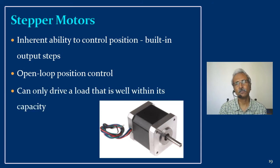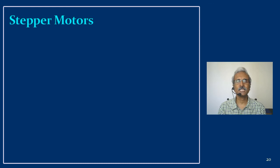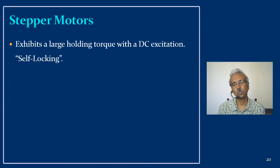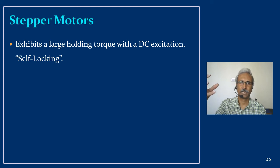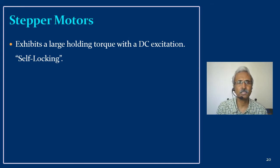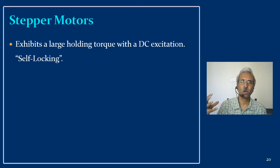The stepper motor can only drive a load well within its capacity since its load carrying capacity is limited by its design. An interesting point is that stepper motors exhibit a large holding torque with DC excitation. Going back to our discussion on accuracy — a rotary joint holding a payload might sag unless the motor has sufficient holding torque. The stepper motor design produces large holding torque, acting as a self-locking mechanism, so you don't need to worry when the robot holds a payload for a longer time. That is one big advantage.